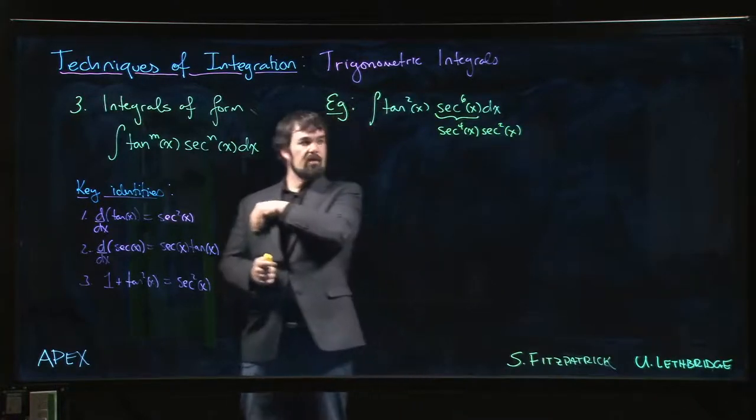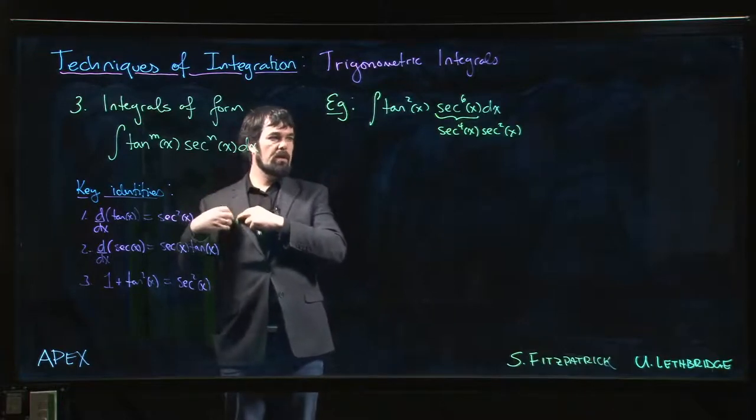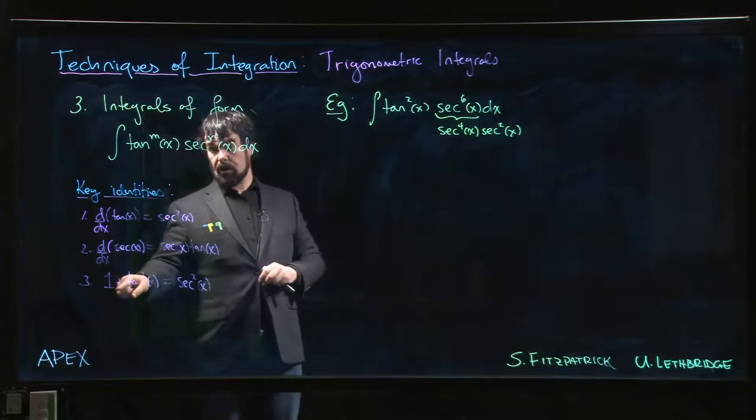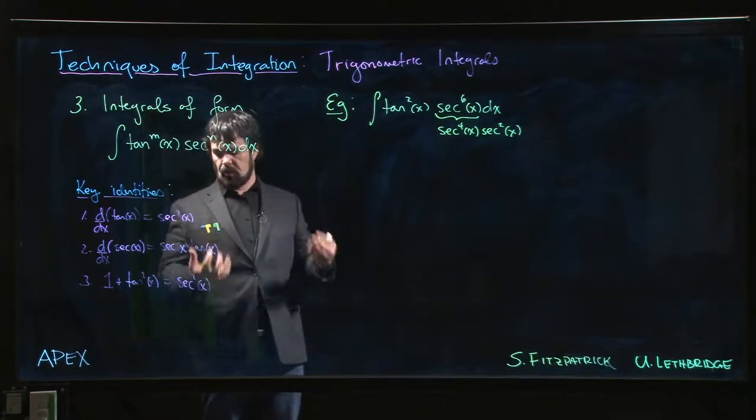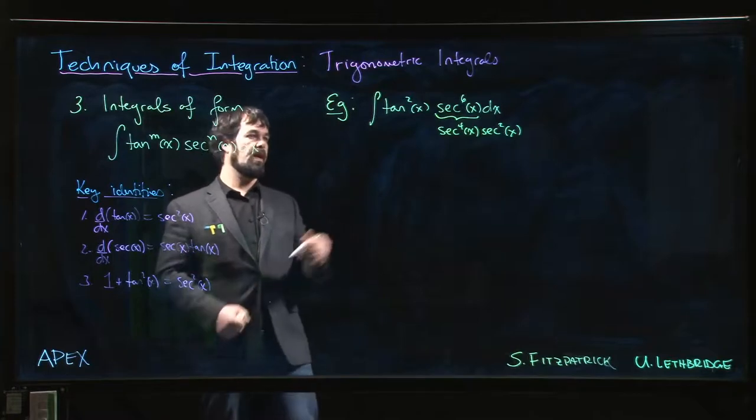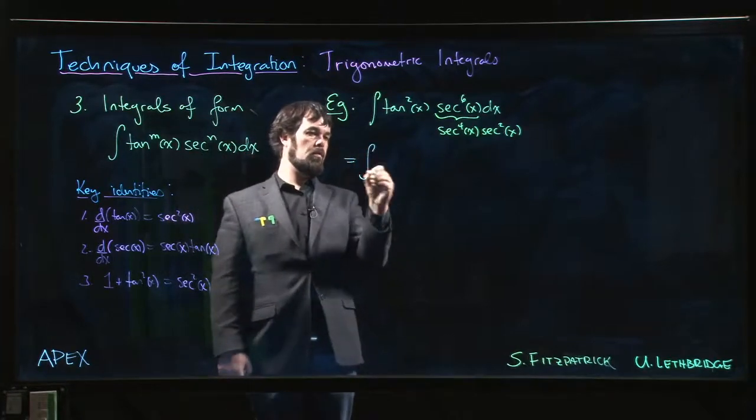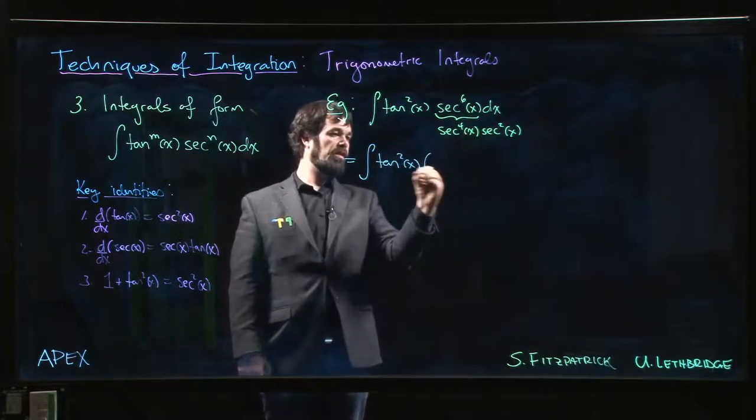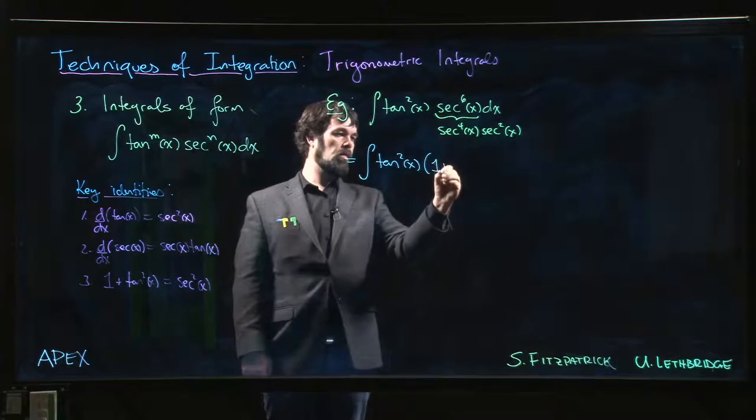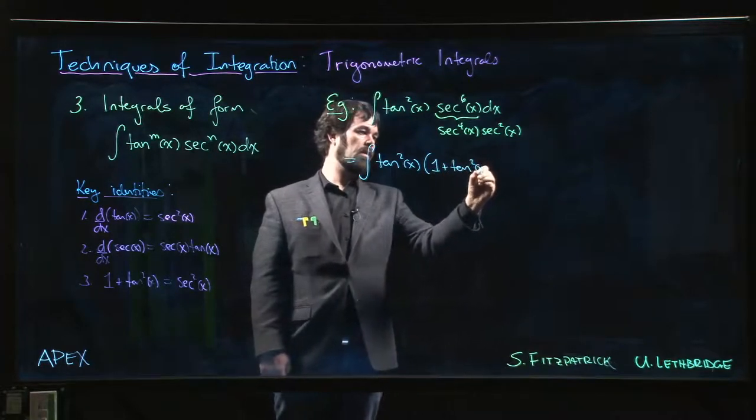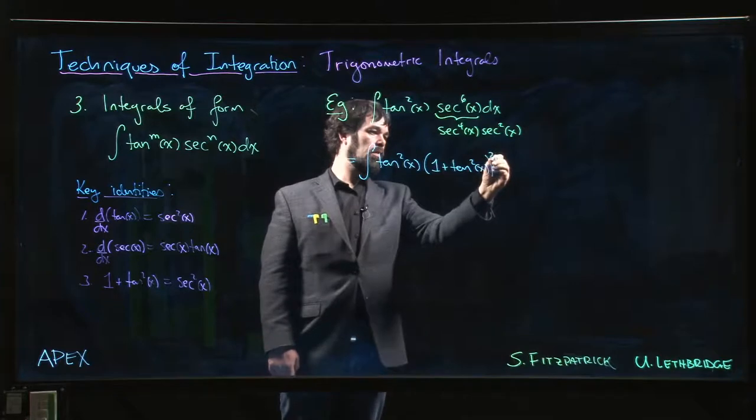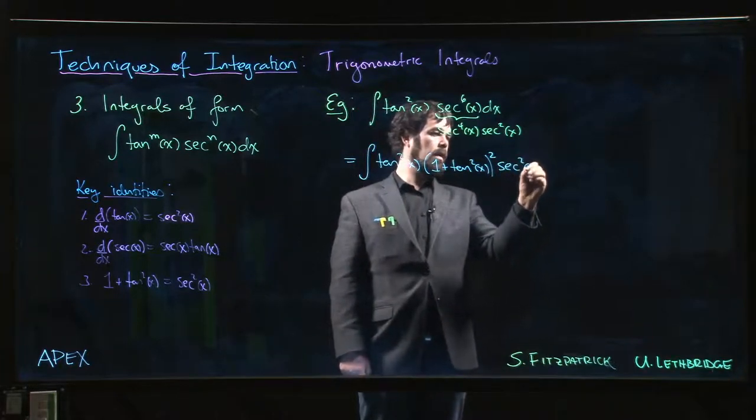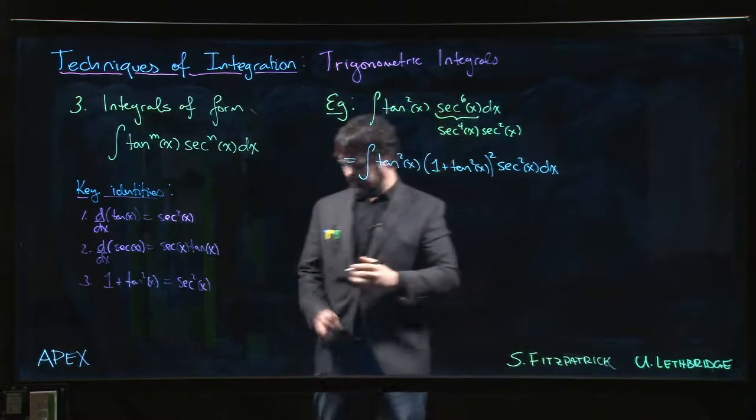And so the reason that's helpful is that, of course, secant squared is the derivative of tan. And if you have an even power, you can employ the Pythagorean identity. Secant to the fourth is just secant squared squared. And so what we get is tan squared x. So secant to the fourth becomes 1 plus tan squared x all squared times secant squared x dx.